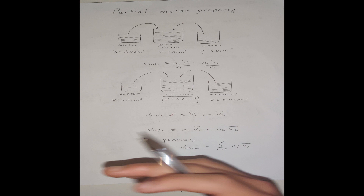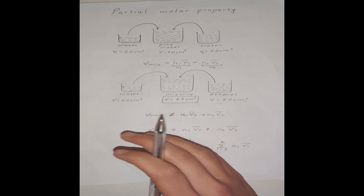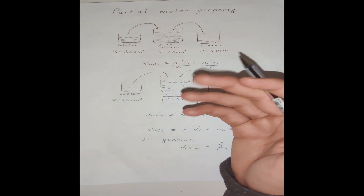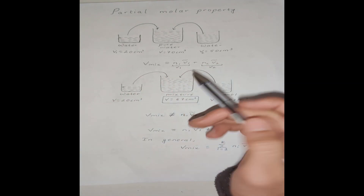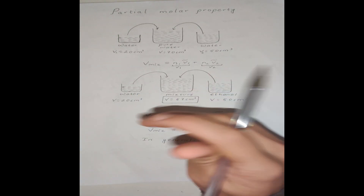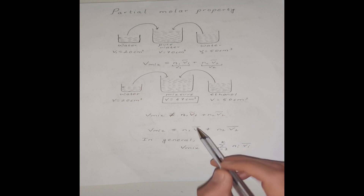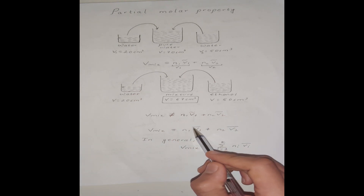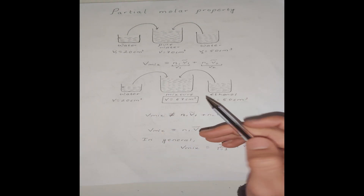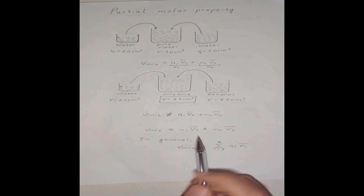V̄₁ and V̄₂, the partial molar property, can be described as the volume a component will have when it is present in a mixture. If it is a pure component — water with water — it assigns itself the pure molar volume Ṽ₁. But if it's present in a mixture where, for example, water and ethanol interact, they interact differently, so the water assigns itself a different volume V̄₁. These two volumes are completely different.